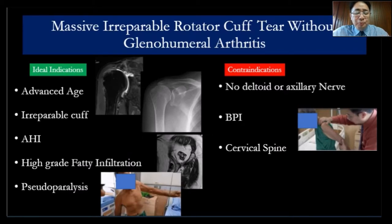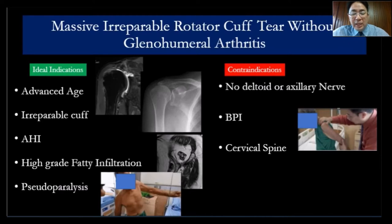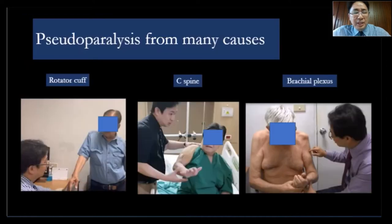The ideal patients for reverse shoulder arthroplasty should be: old enough, advanced age, irreparable cuff, narrow-angled acromion, severe fatty infiltration — it's important to look for the teres minor — and lastly, pseudoparalysis.